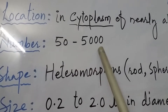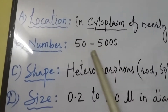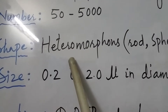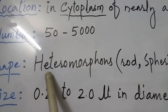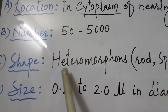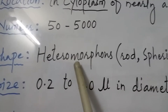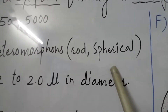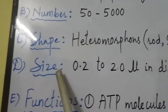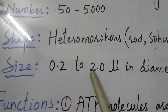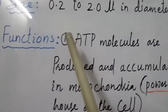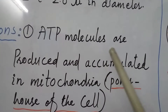There are about 50 to 5000 mitochondria in a cell. The shape of mitochondria varies, hence it is called heteromorphous — hetero means different and morph means shape. It is found in more than one shape, like rod shape and spherical shape. Its size varies from 0.2 to 2 micrometers in diameter.